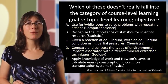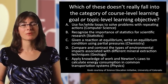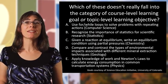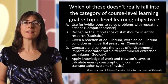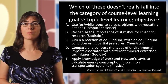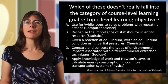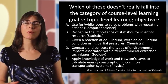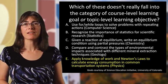There's another question using the same list: which of these does not really fall into either the course-level learning goal or topic-level learning objective category? The candidates are B and E, since those weren't topic-level goals. B — recognize the importance of statistics for scientific research — looks like a clear course-level goal achievable across several topics. But E — apply knowledge of work in Newton's laws to calculate energy consumption in common transportation systems — is tricky. If it ended at 'calculate energy consumption,' it would be a good course-level goal, but adding 'in common transportation systems' gives it a very specific context, making it a weird hybrid of topic-level and course-level. So E is the fuzzy one that doesn't really fit either category.